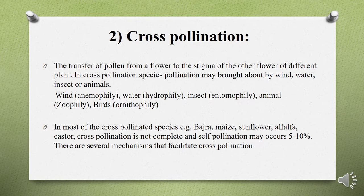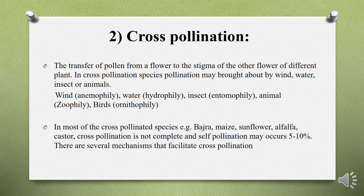Cross-pollination is the transfer of pollen from a flower of one plant to the stigma of another flower of a different plant. It is done by various agents: by wind — anemophily; by water — hydrophily; by insects — entomophily; by animals — zoophily; by birds — ornithophily. Cross-pollination occurs in crops like bajra, maize, sunflower, and alfalfa. When cross-pollination is not complete, there are 5 to 10% chances of self-pollination.